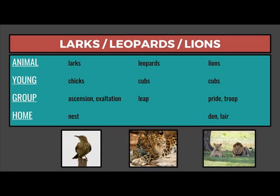The young of larks are chicks. A group of larks is an ascension or exaltation. The home of larks is a nest. The young of leopards are cubs. A group of leopards is a leap. There's no specific name for a home for leopards — they're often solitary and often in trees.